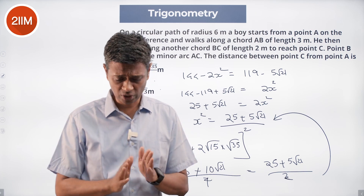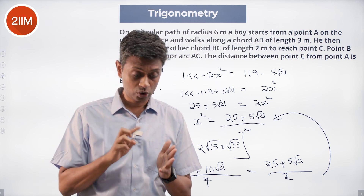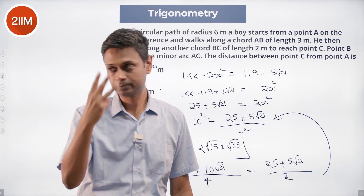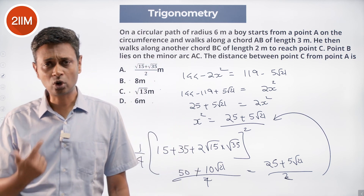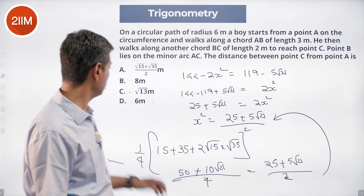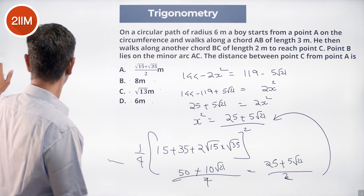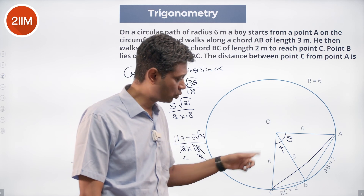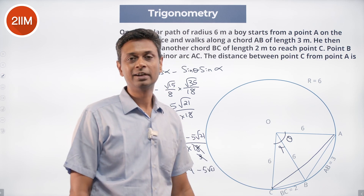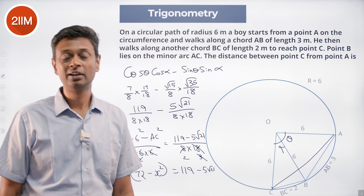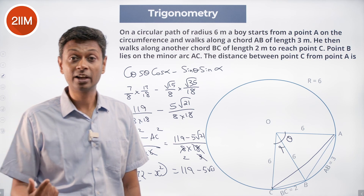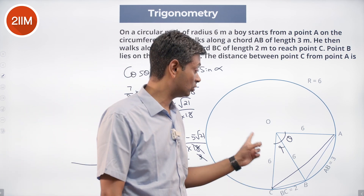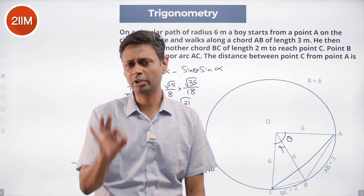This is a time-consuming question based on the idea of applying the cosine rule — not once, not twice, but thrice. Cosine rule for triangle AOB, cosine rule for triangle BOC, get cos θ and cos α, then sin θ and sin α, then cos(θ + α). Then plug in the cosine rule for triangle AOC. Super tough question.